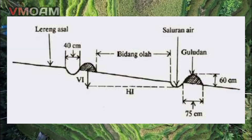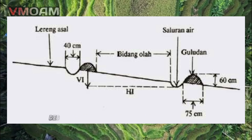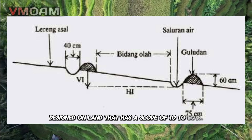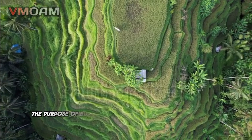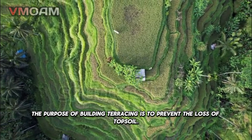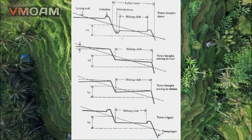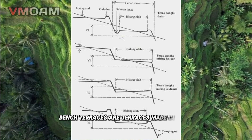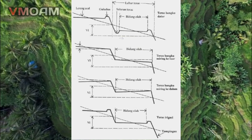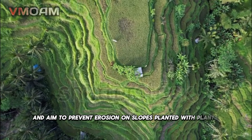Contour terraces are a type of terrace designed on land that has a slope of 10–50%. The purpose of building this terracing is to prevent the loss of topsoil. Bench terraces are terraces made on Huma using a slope of 10–30% and aim to prevent erosion on slopes planted with plants.